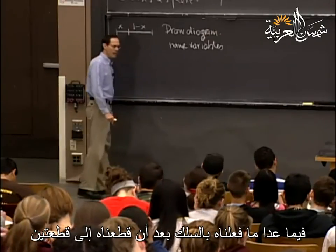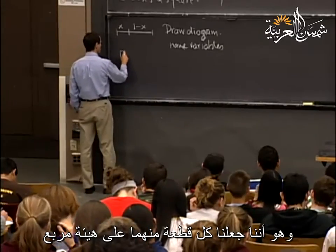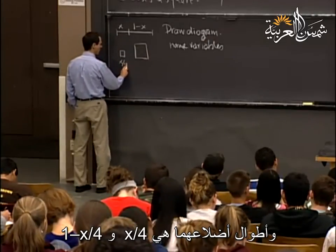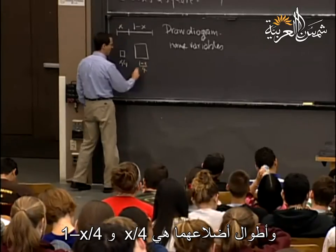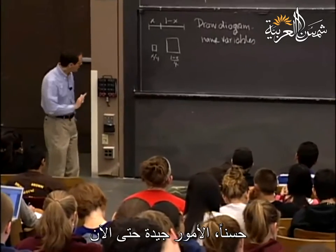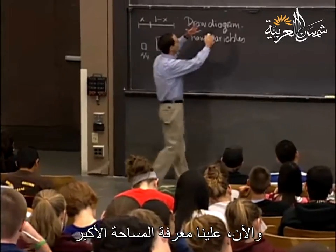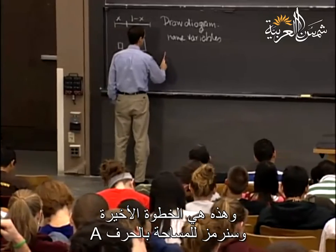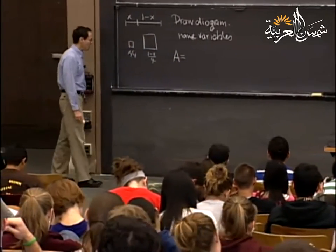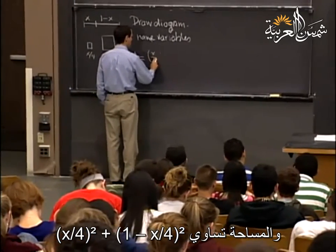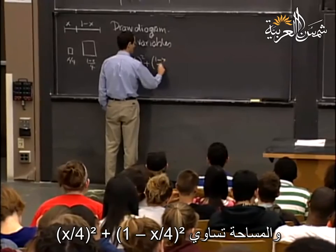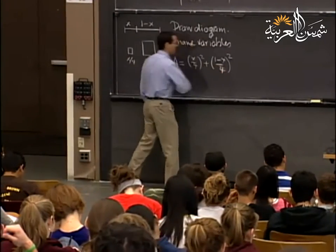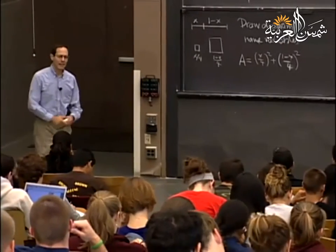There's something we did with the wire after we cut it — namely, we built two little squares out of it. Their side lengths are x/4 and (1−x)/4. Now we want to find the largest area, so I need a formula for area. I'll give the letter A as the label for the area. The area is (x/4)² plus ((1−x)/4)².